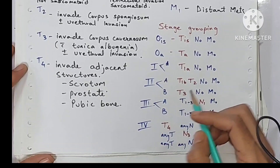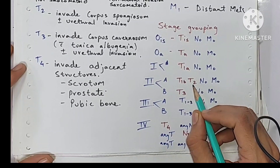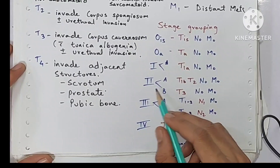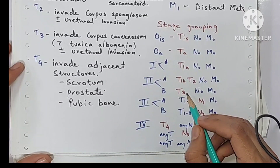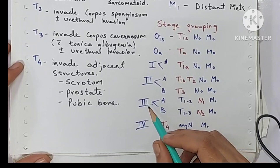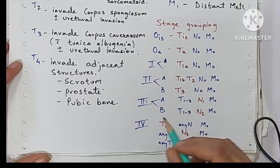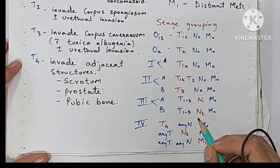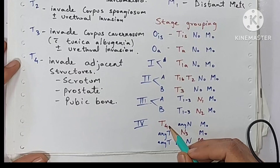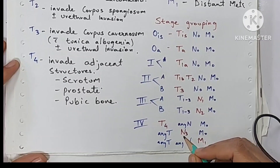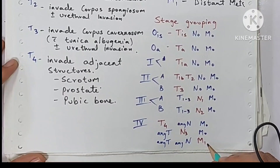Stage 2a is when it is either T1b or T2. Stage 2b is when it is T3, meaning it invades corpus cavernosum. Stage 3a is when there is unilateral mobile inguinal lymph node. Stage 3b is when there is bilateral mobile inguinal lymph node. Stage 4 is when the tumor has involved adjacent structures like scrotum, or N3 with fixed inguinal or pelvic lymph node, or M1 with distant metastasis.